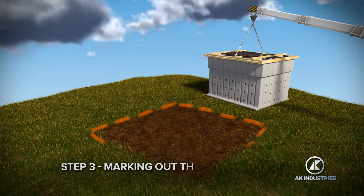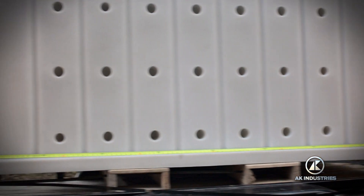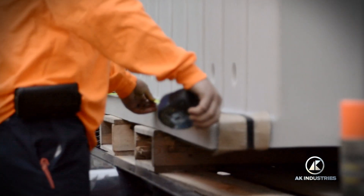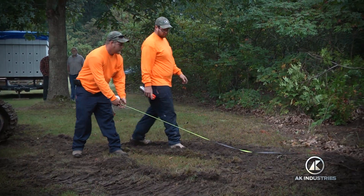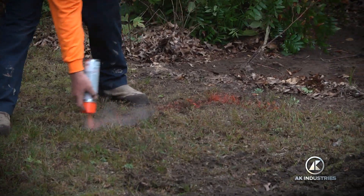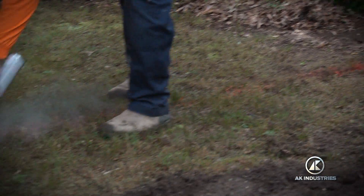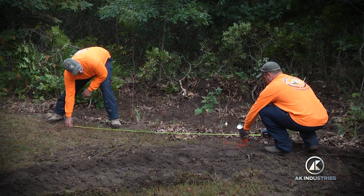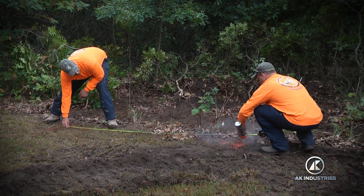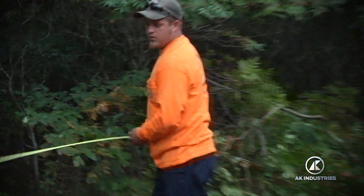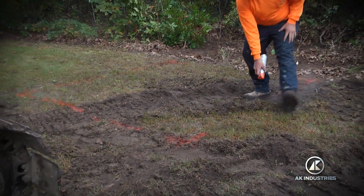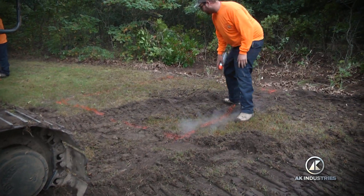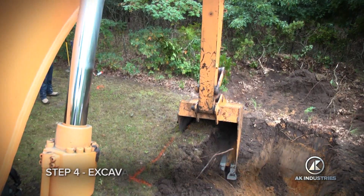Step 3: Marking Out the Area for Excavation. Using a tape measure, confirm the measurements of the storm shelter itself — length, width, and height. The instruction booklet also has this information available. In the area to be excavated for installation, mark out an area using the length and width measurements you have confirmed. You can use either a tool to scratch out marks for excavation, a string, or marking paint to designate the area.